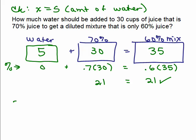Or you could write that 0.6, by the way, as 3 fifths times 35, and don't even need a calculator. 7 times 3 is 21, cool, huh? So, final answer is, add 5 cups of water.